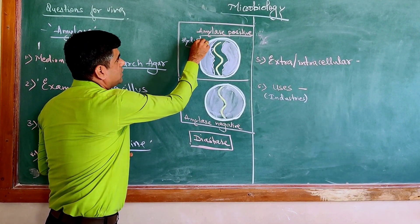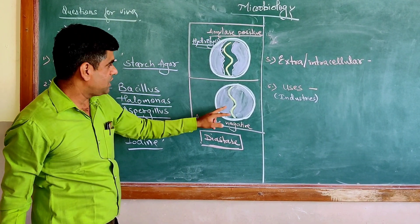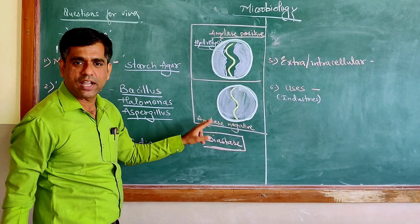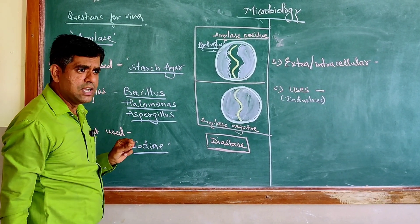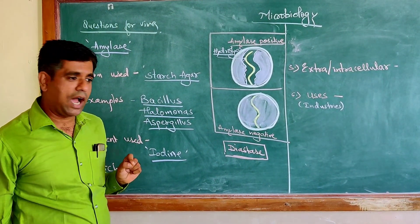If you observe this zone of hydrolysis, the organism is positive for amylase, and if there is no zone of hydrolysis, the organism is negative for amylase. Organisms like E. coli you will find is negative for this particular amylase.